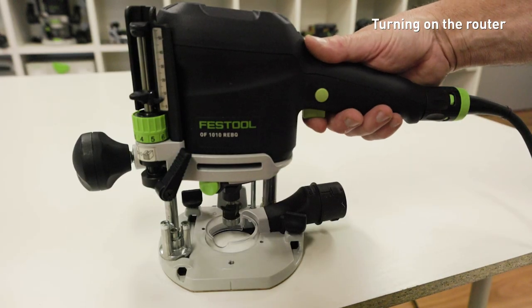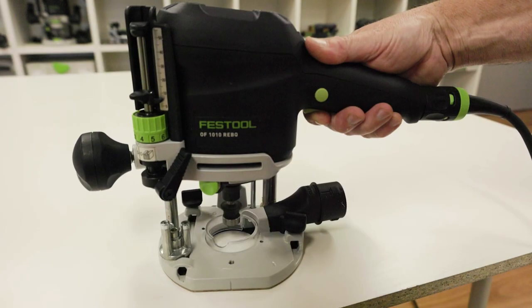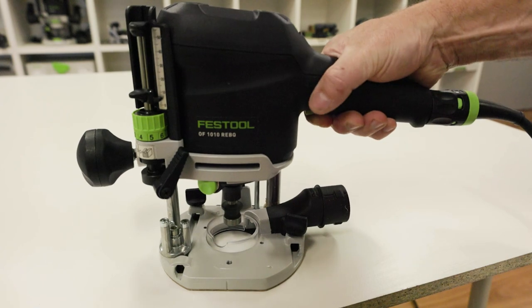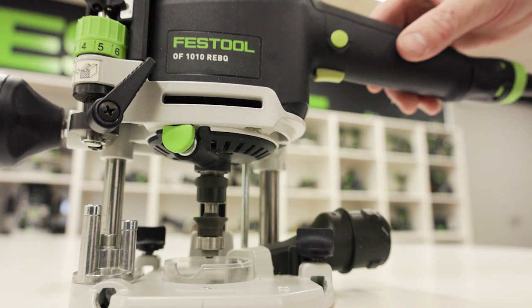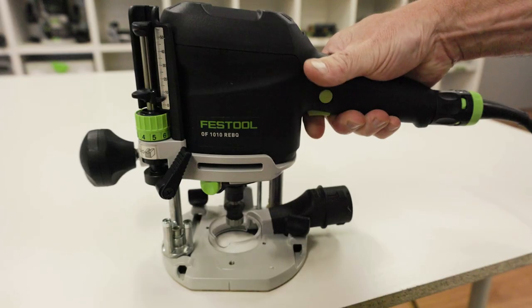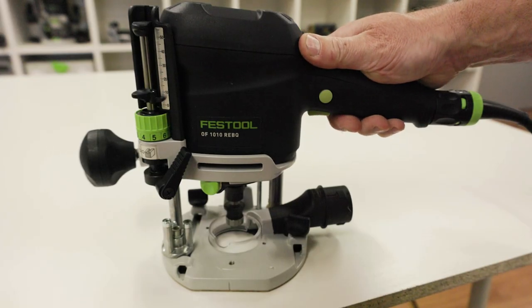The switch is located under the handle and is used to switch the tool on and off. For continuous operation, the switch can be locked by means of the button on the side of the handle. The switch can be unlocked and the tool turned off by pressing it once again.